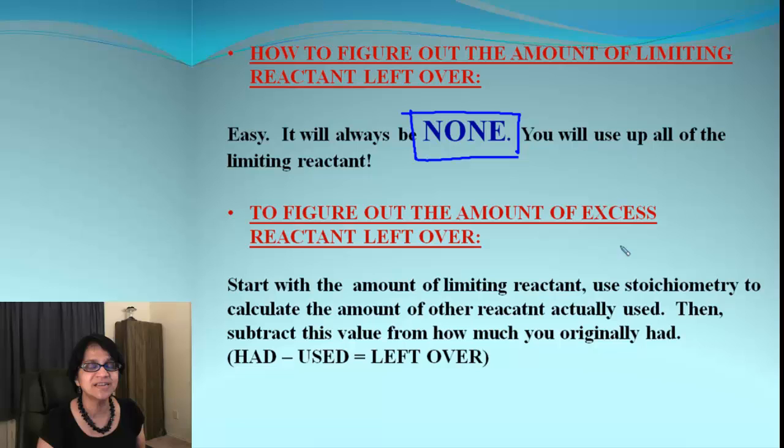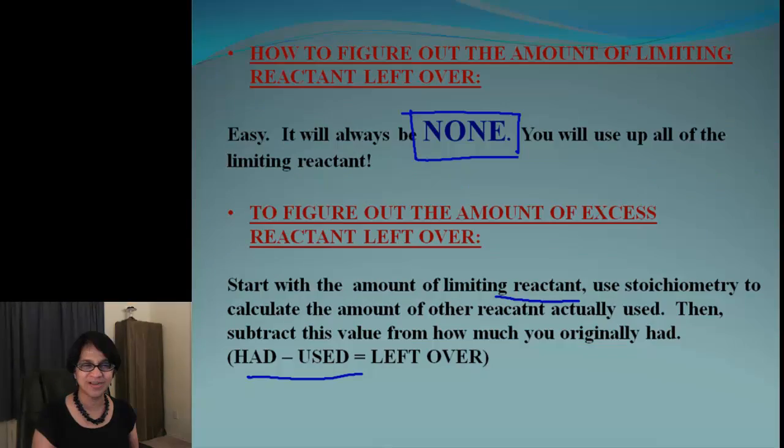And then, how much amount of excess reactant is left over? For that calculation, we go from the limiting reactant, and then we go to the other product, and we find out how much is being used, and then of course, we go through subtraction, like we did for butter, and we find out how much is left over.